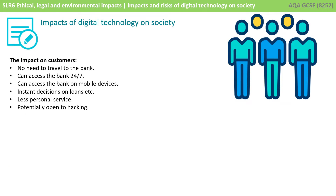So let's break this scenario down and think about the four different groups of people in society that the situation would impact on. We've got the customers of the bank, we've got the staff working at the bank, we've got the bank's directors and shareholders, and we've got the local community.